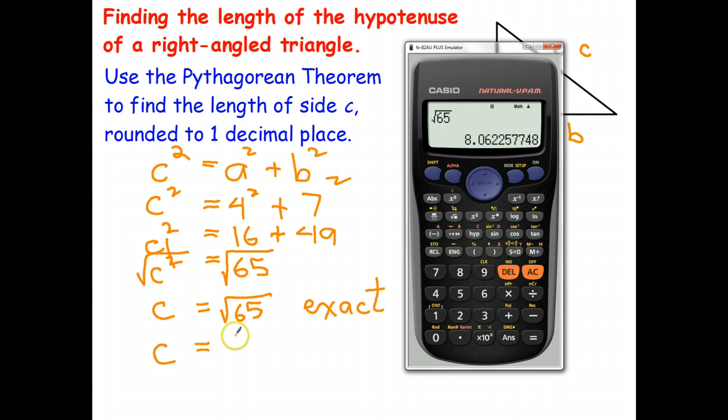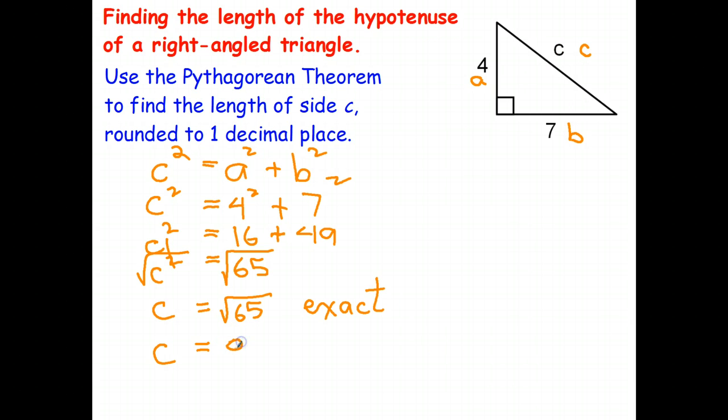So the answer is c equals 8.1 rounded or approximate answer, rounded to the nearest tenth. And that's all there is to using Pythagoras to finding unknown sides. And again, it works for any side of any right angle triangle.